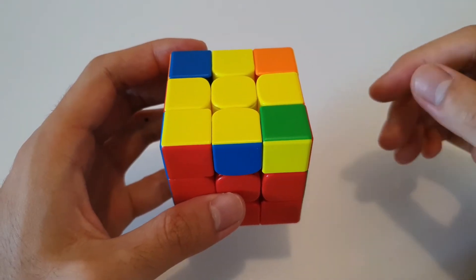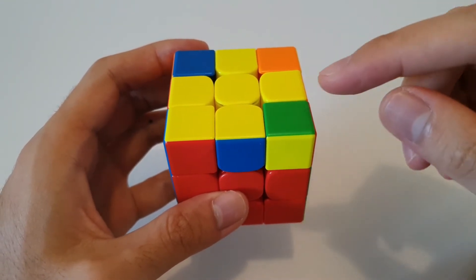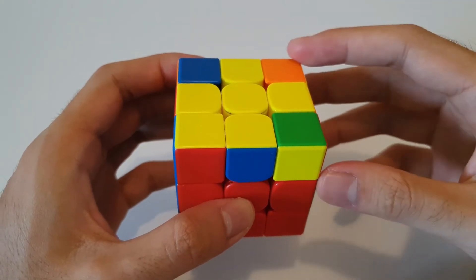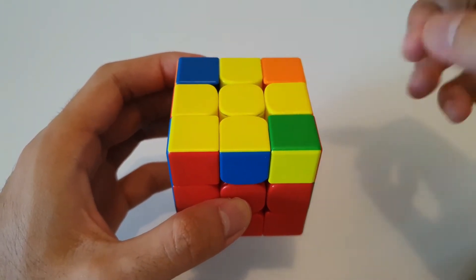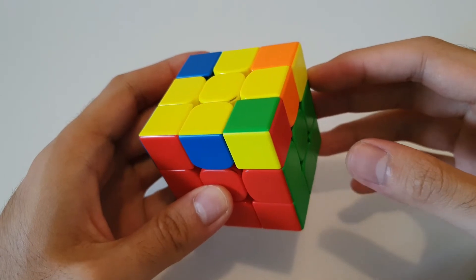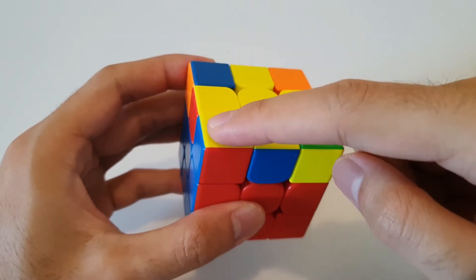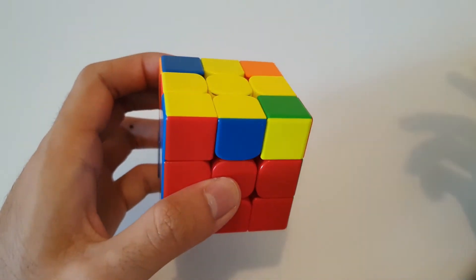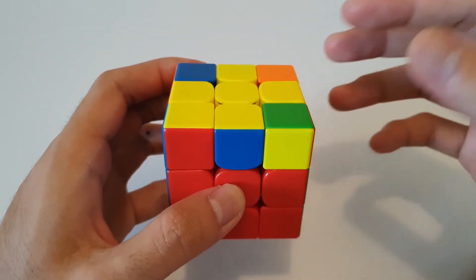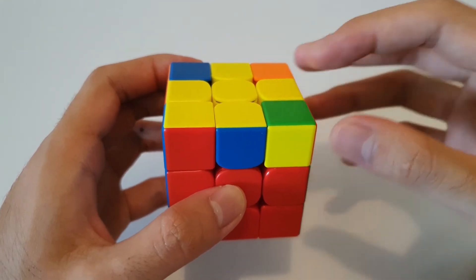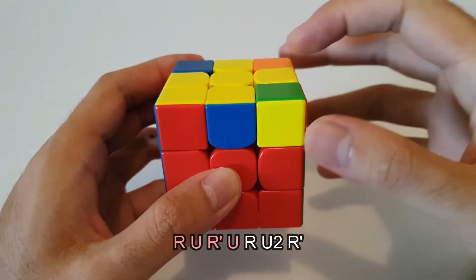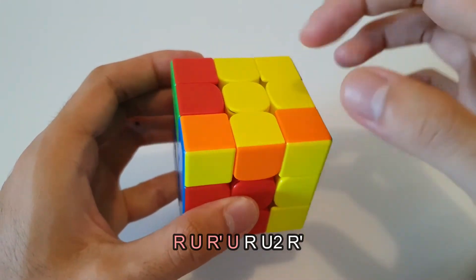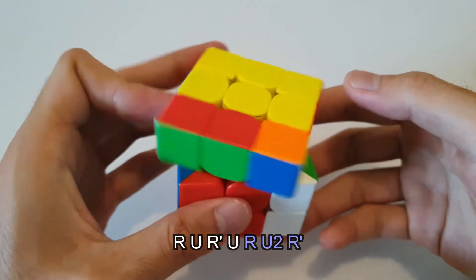So now that we've made the yellow cross on top, the next step is to orient the yellow corners as well. There are seven different possible cases that you can get with the corners. This is the first case that we can get. It's when we have one corner oriented, and the other three corners are unoriented, like this. This is called the Sune, and it can be solved using the Sune algorithm, which goes like this. You can think about taking this F2L pair out, moving it to the back, and inserting it back into the front with a U2 insert.